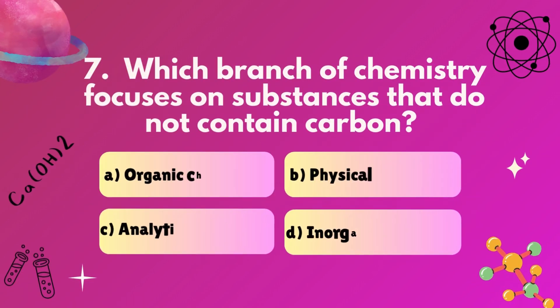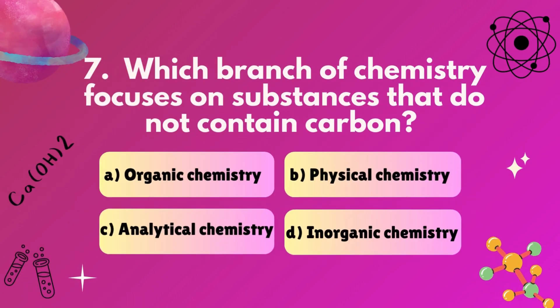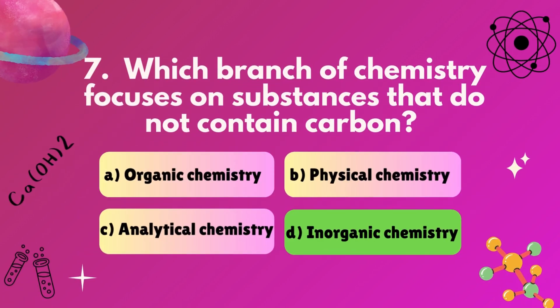Question 7: Which branch of chemistry focuses on substances that do not contain carbon? A, organic chemistry. B, physical chemistry. C, analytical chemistry. D, inorganic chemistry. Correct answer: D, inorganic chemistry.